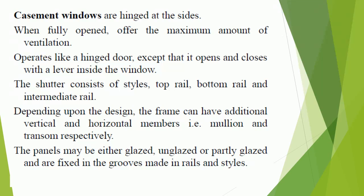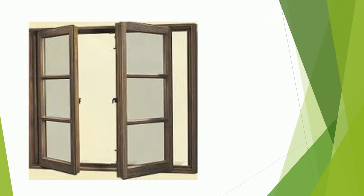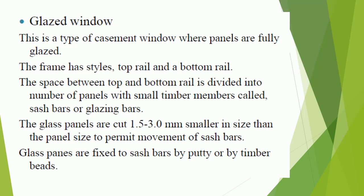The panels may be glazed, unglazed, or partly glazed, and are fixed in the grooves made in rails and stiles. This is a type of casement window where panels are fully glazed. The frame has stiles, top rail, and a bottom rail. The space between top and bottom rail is divided into panels with small timber members called sash bars or glazing bars. The glass panels are cut 1.5 to 3.0 mm smaller than the panel size to permit movement of sash bars, and glass panes are fixed to sash bars by putty or timber beads.